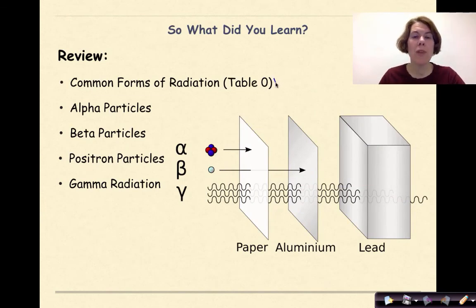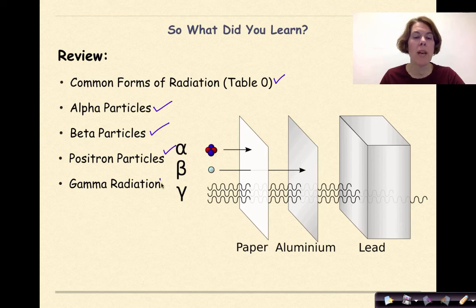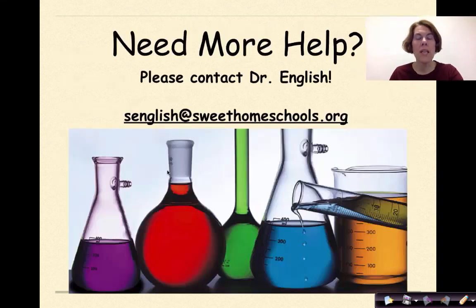So what did you learn? We talked about common forms of radiation by looking at Table O — alpha particles, beta particles, positron particles, and gamma radiation. Need more help? Feel free to contact me. Have a great day!